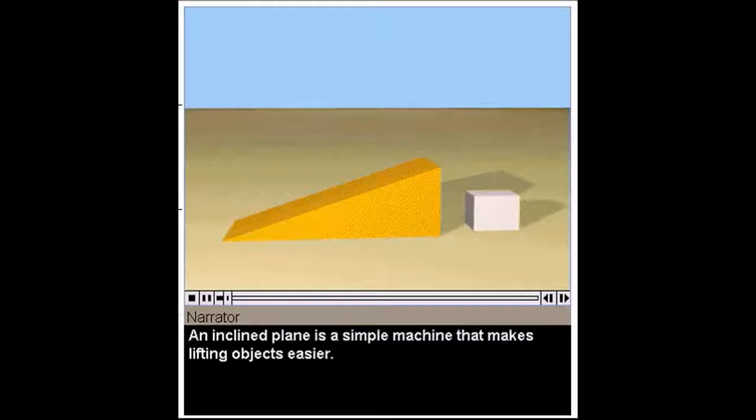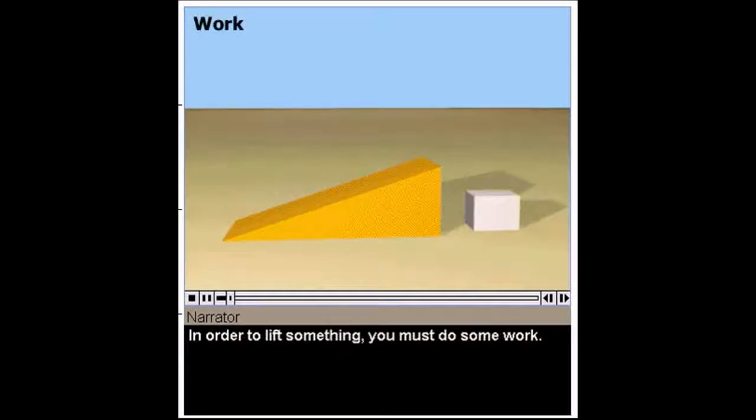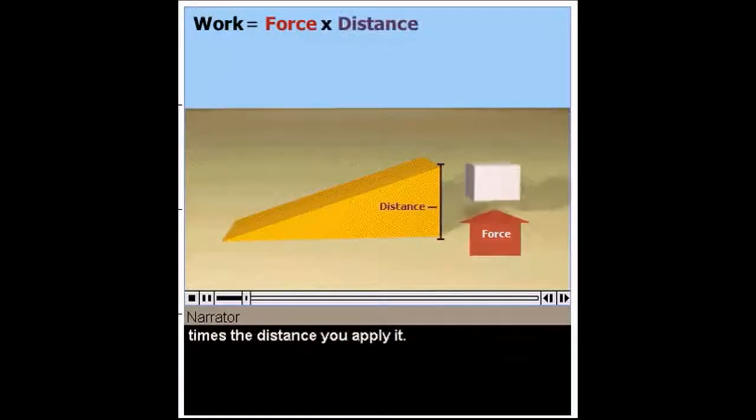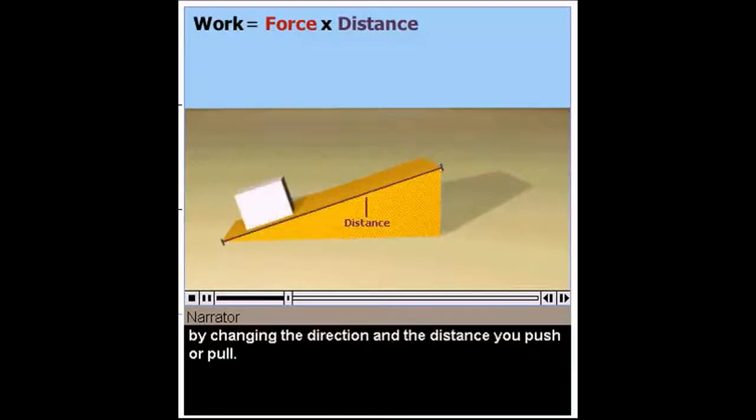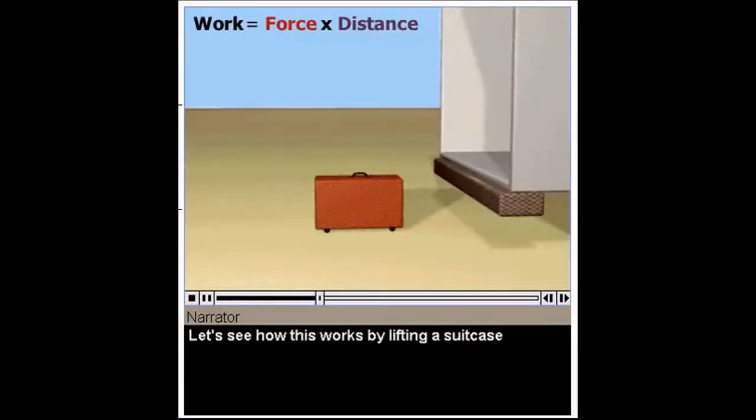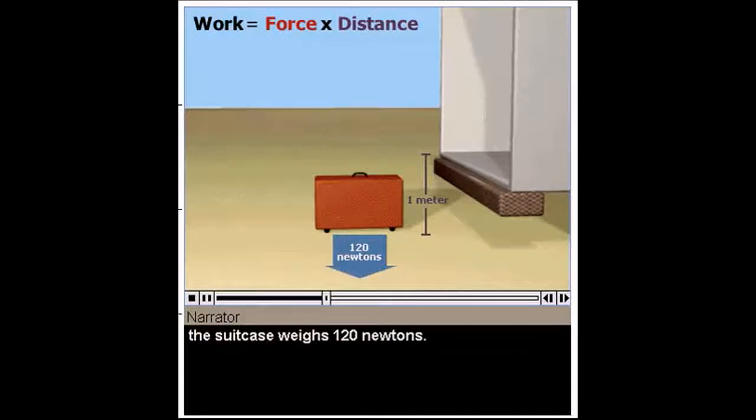An inclined plane is a simple machine that makes lifting objects easier. In order to lift something, you must do some work. The amount of work you do is equal to the force you use, or the effort of your pull, times the distance you apply it. An inclined plane makes things easier by changing the direction and the distance you push or pull. This also changes the amount of force you need to use. Let's see how this works by lifting a suitcase one meter up into a van. The suitcase weighs 120 newtons. Newtons are a way to measure force, such as weight. Without the plane, you would need to lift with a force of 120 newtons for one meter. This would take 120 newton meters of work.